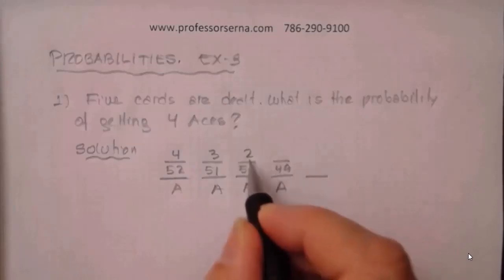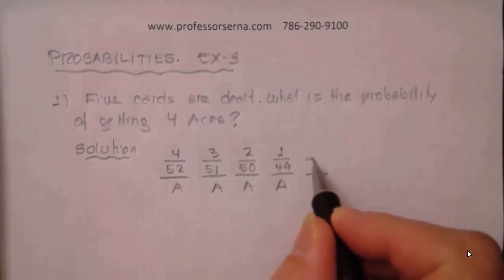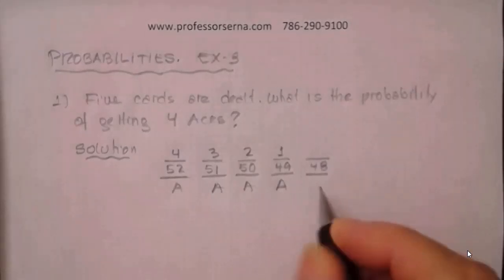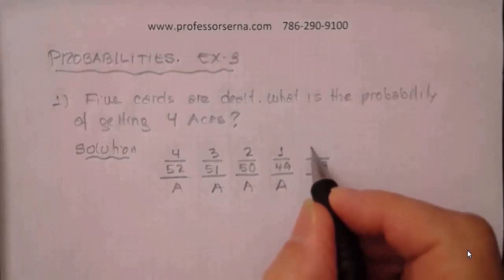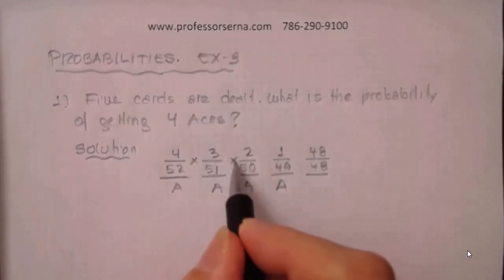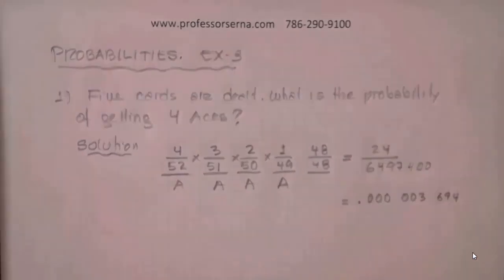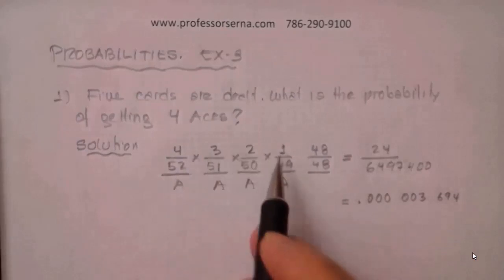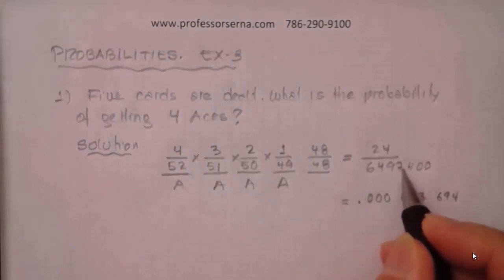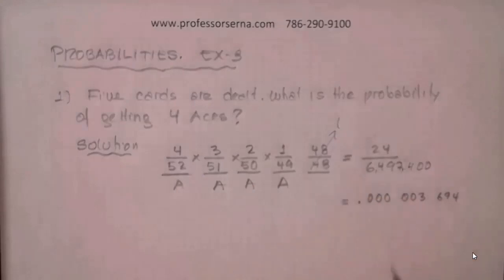For the fourth ace, we have 49 cards left and only one ace, so that's 1 out of 49. For the last card there is no requirement — it can be anything. We have 48 cards left, so the probability is 48 out of 48, which is just one and doesn't affect our calculation. The probability so far is the product of those four fractions: 24 divided by 52×51×50×49.